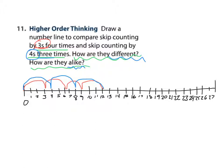So when you look at our red number line, we are skip counting by 3, 4 times, which equals 12. And then our blue number line, skip counting by 4, 3 times, that also equals 12.